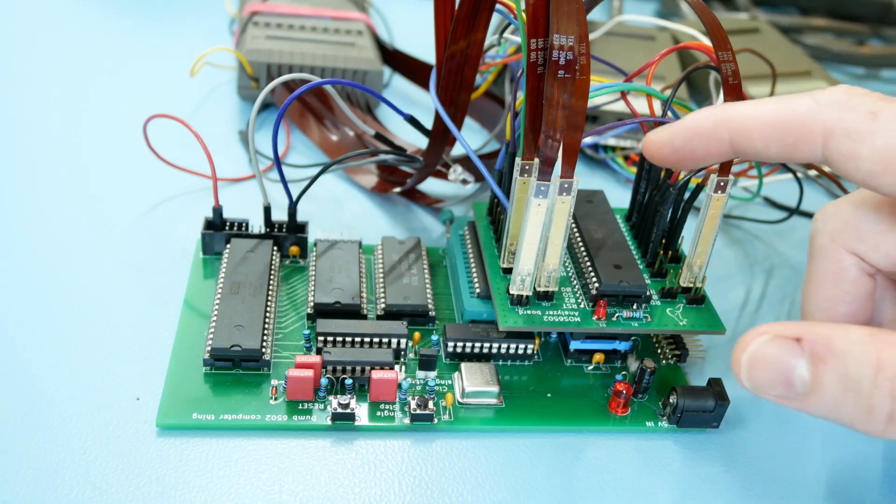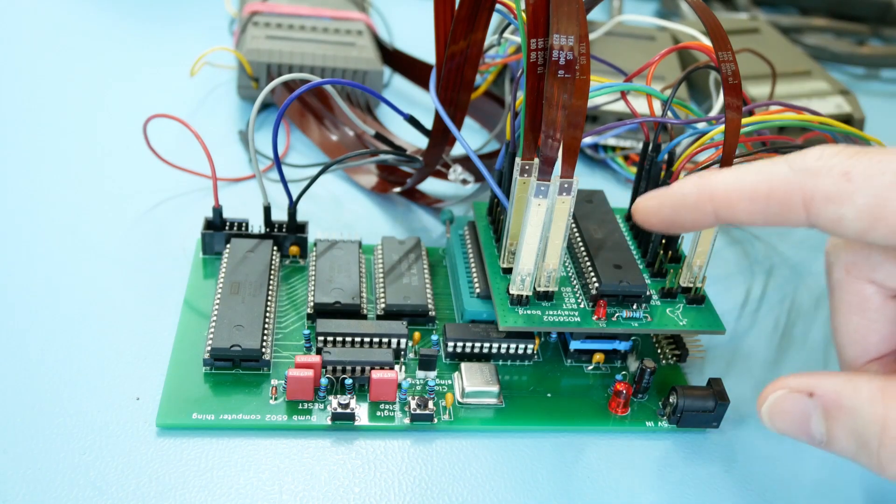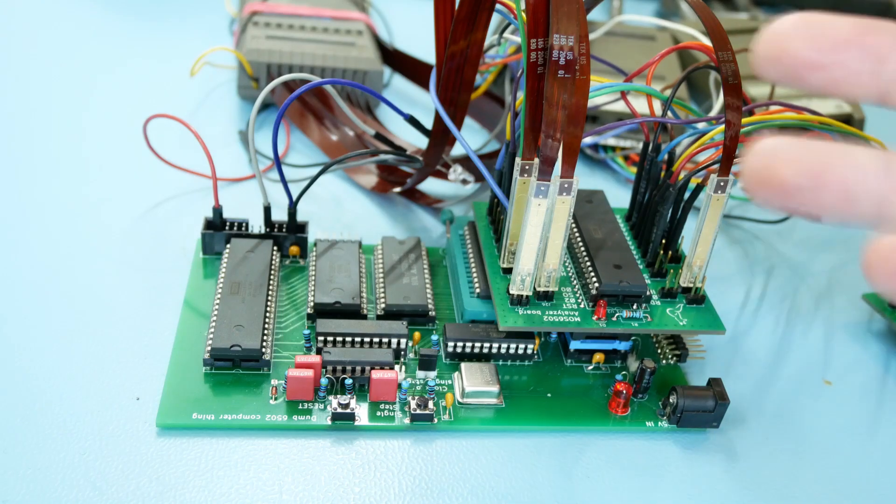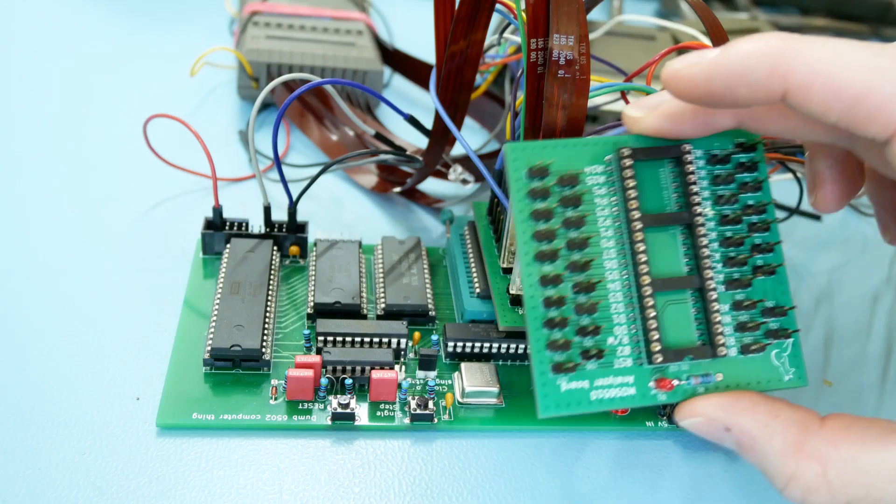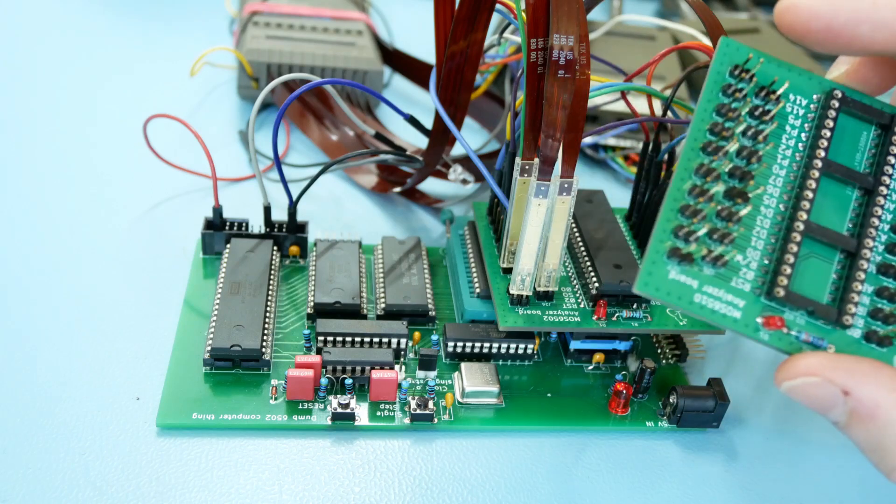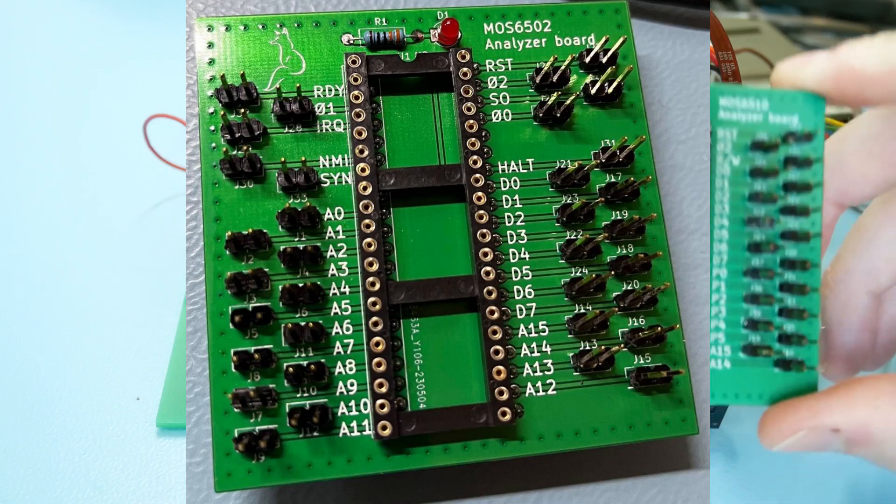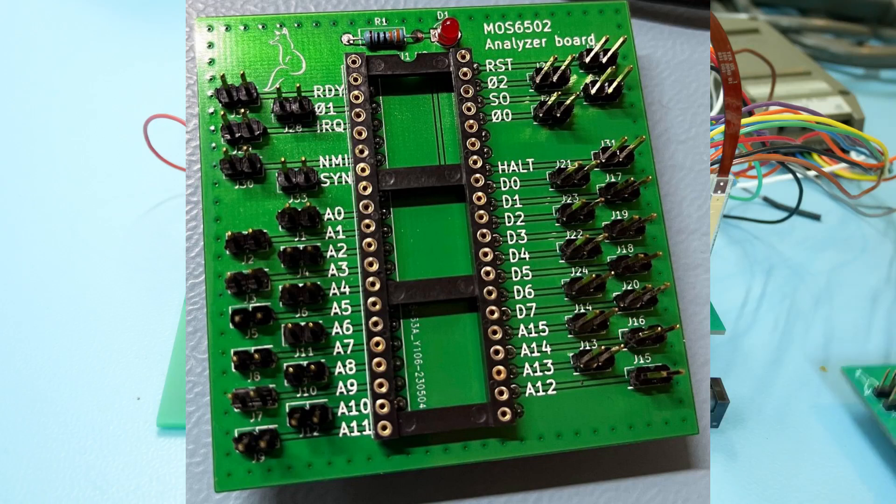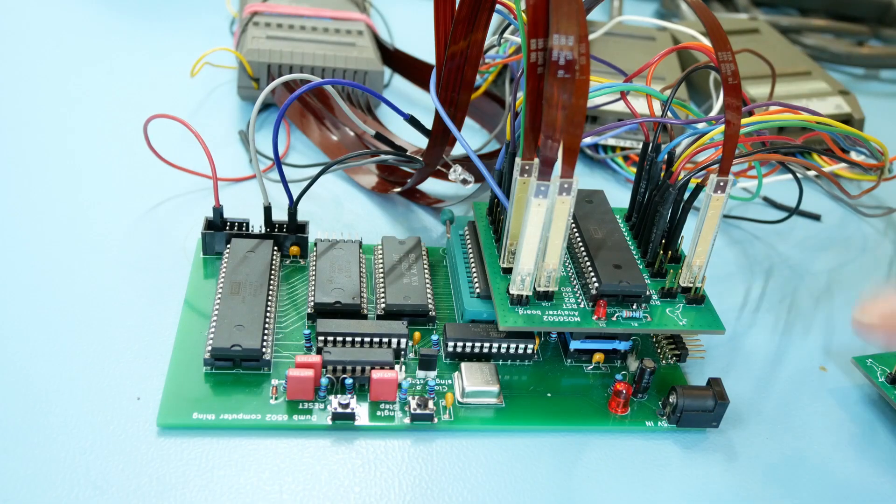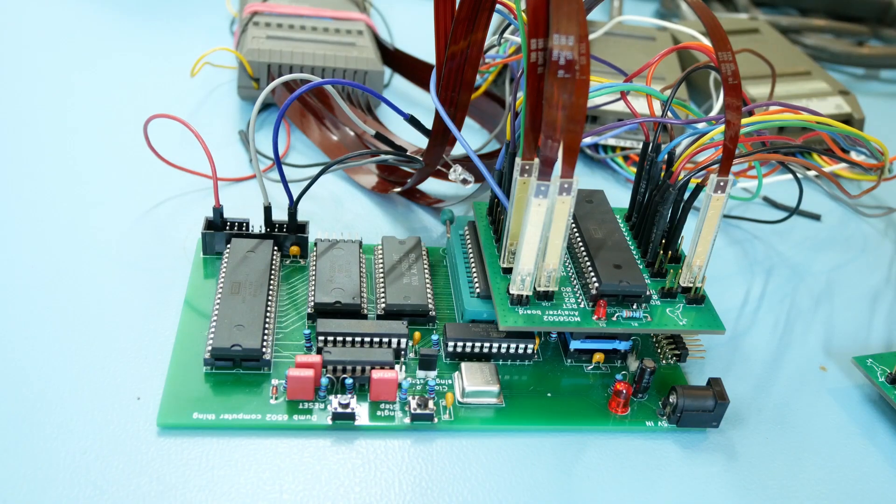Now to capture all the signals on the 6502 or any other CPU you might want to analyze you need to connect a wire to every pin of the CPU. Now to make this a little bit easier I designed a small breakout board for that. This one is for a 6510 but I also got one for the 6502. The KiCad files are linked in the description down below. If you want to analyze any different CPU you might want to make a board like this yourself.